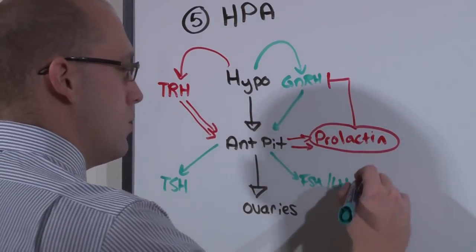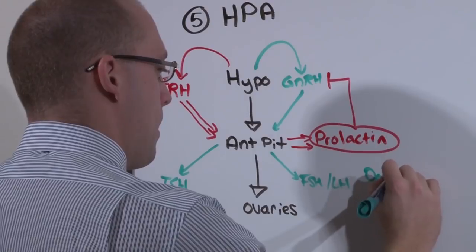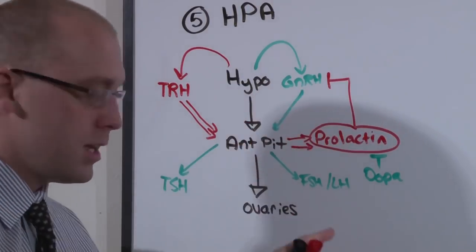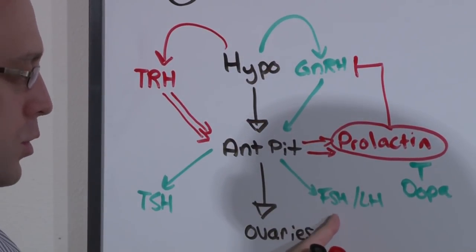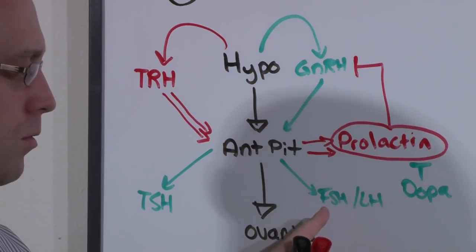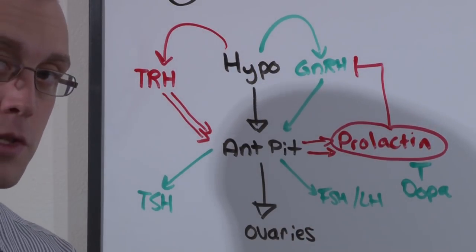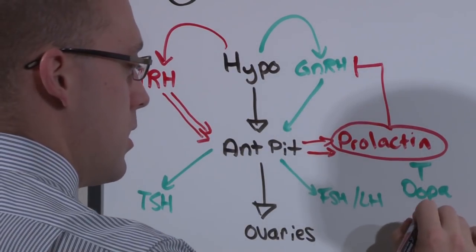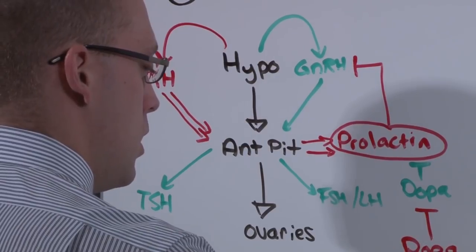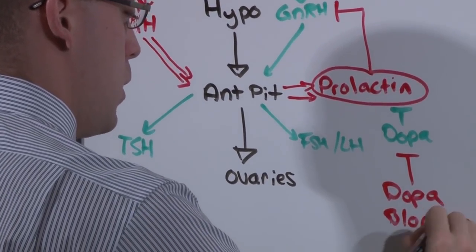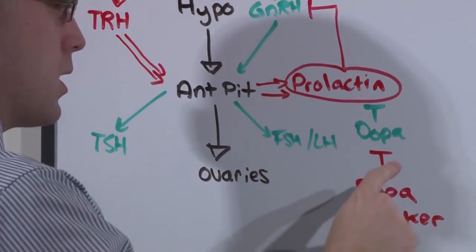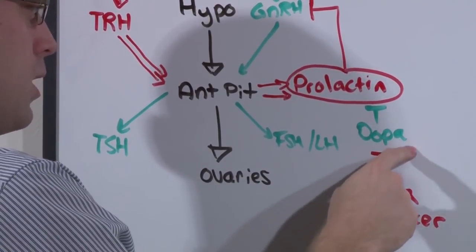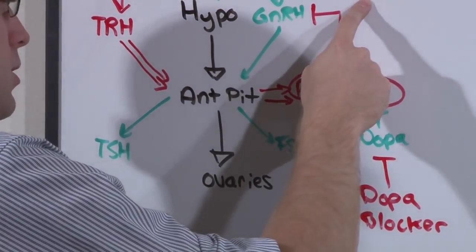Normally, dopamine inhibits prolactin. Inhibiting the inhibitor disinhibits the axis. So the presence of dopamine produces reproductive cycles. If you put someone on a medication that inhibits dopamine, such as an atypical antipsychotic, a dopamine blocker. This is complicated with a number of inhibitions. But dopamine blockers block DOPA, which normally block prolactin. But now, because their dopamine is being blocked, prolactin is allowed to act and block GnRH.